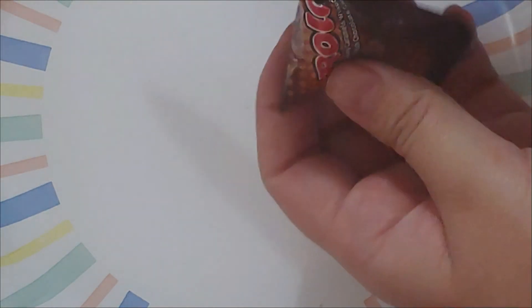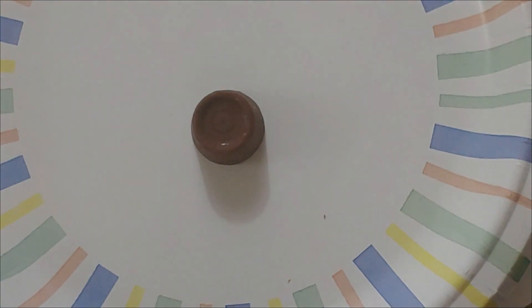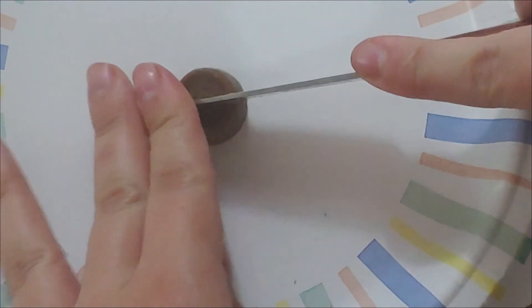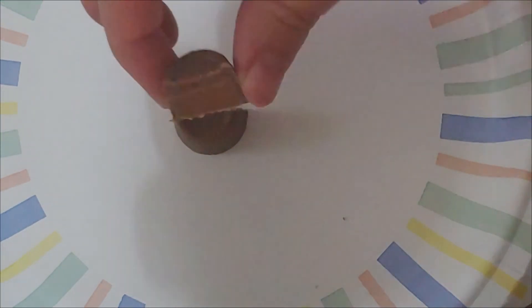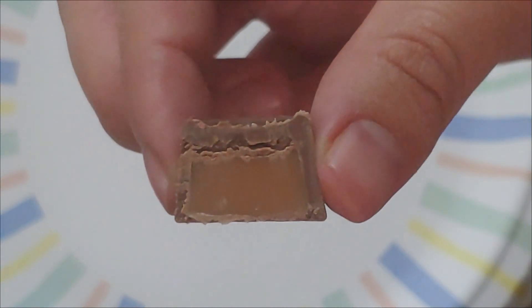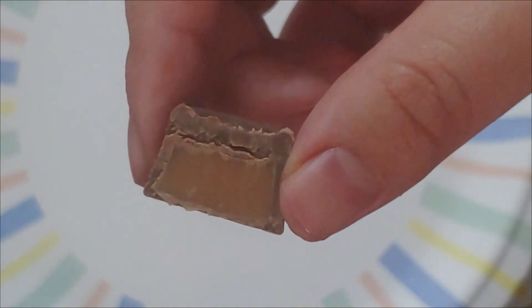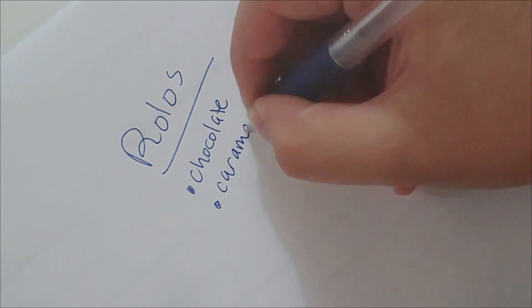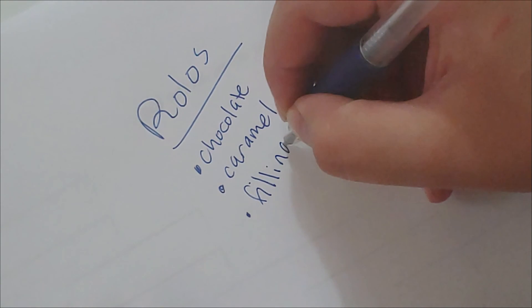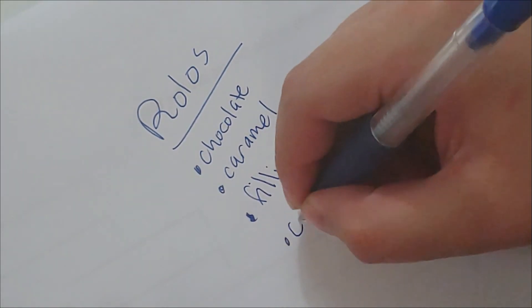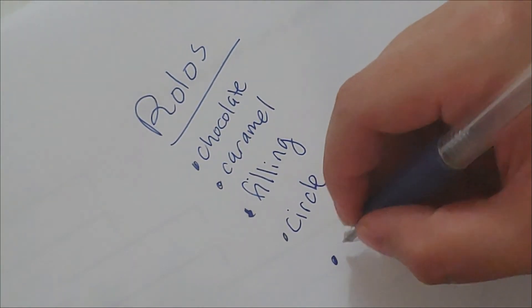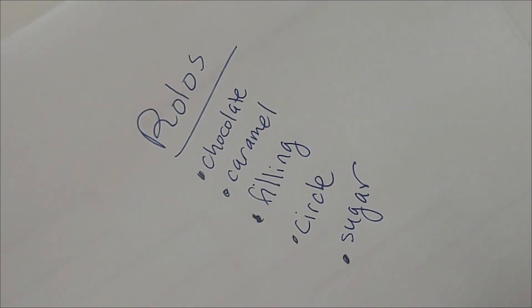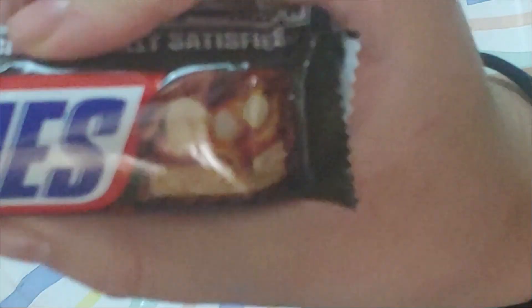The next organism is a Rolo. To keep our level of treatment consistent throughout the experiment, we'll cut it down the middle. We can clearly see that it has filling — more specifically caramel. Traits for Rolo: it is made of chocolate, it has caramel inside so it has filling, the shape was notably different — it was a circle shape — and of course it's made of sugar.